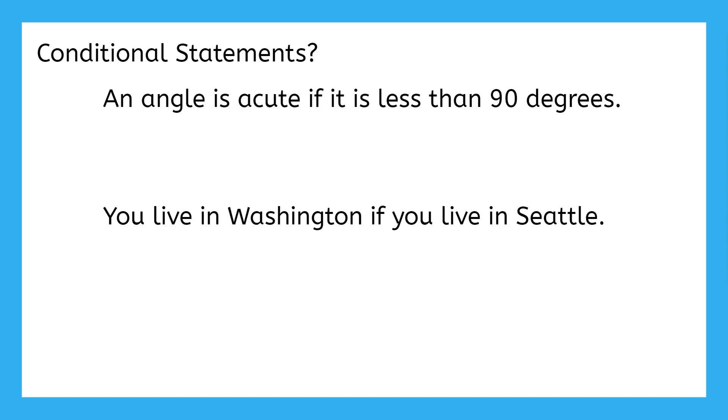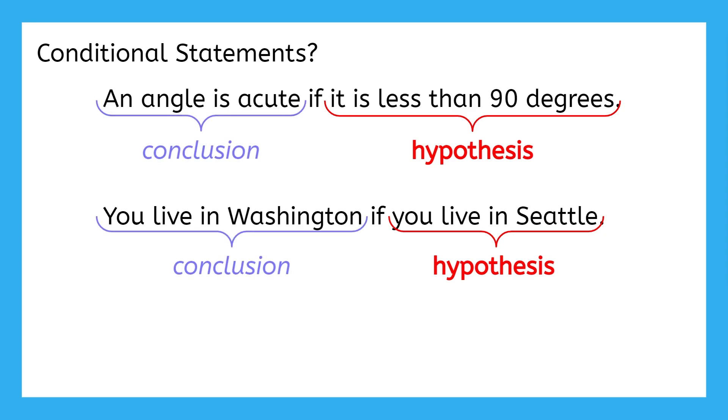Here are our hypotheses. It is less than 90 degrees, and you live in Seattle. And here are our conclusions. An angle is acute, and you live in Washington. These statements would still be written in shorthand as P implies Q. Even though the conclusion, Q, appears first in the sentence, it comes second when we think about this logically.